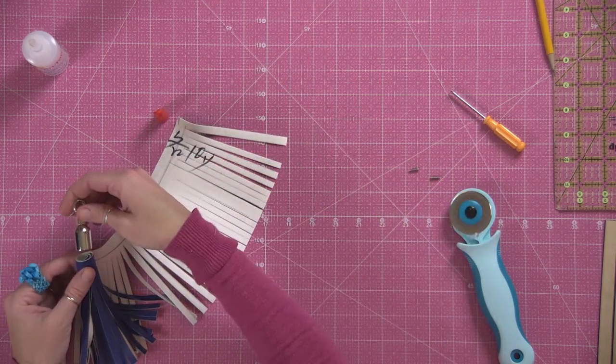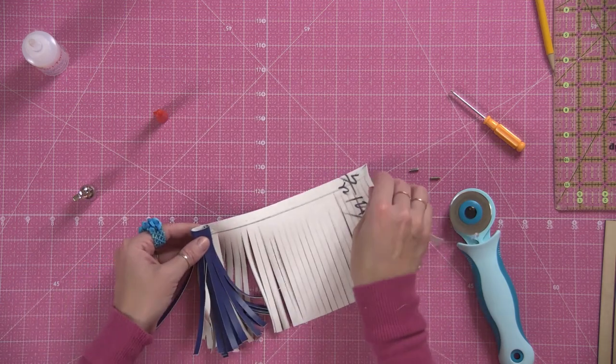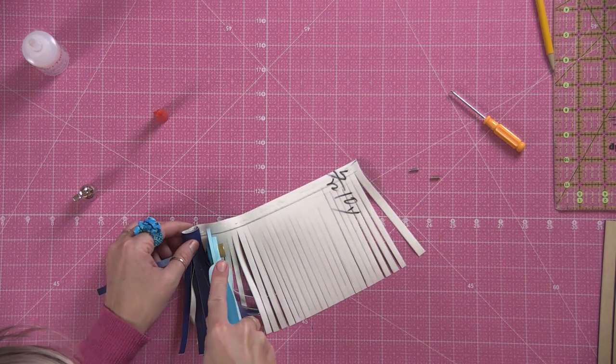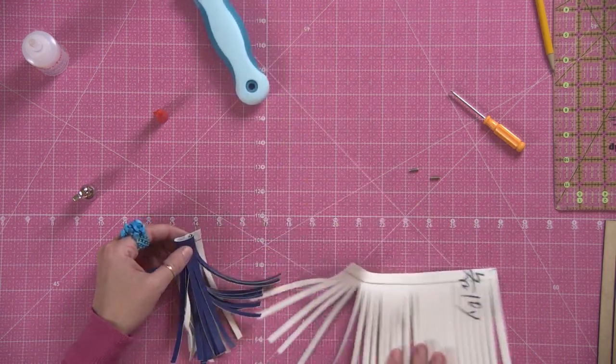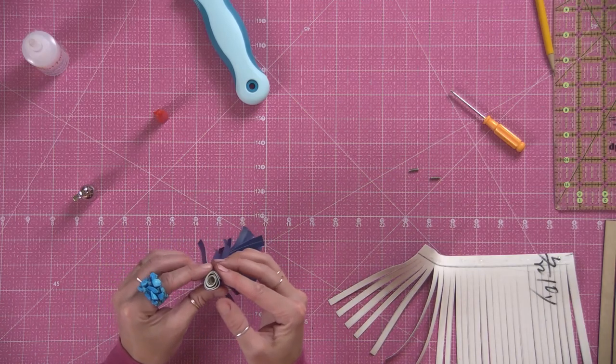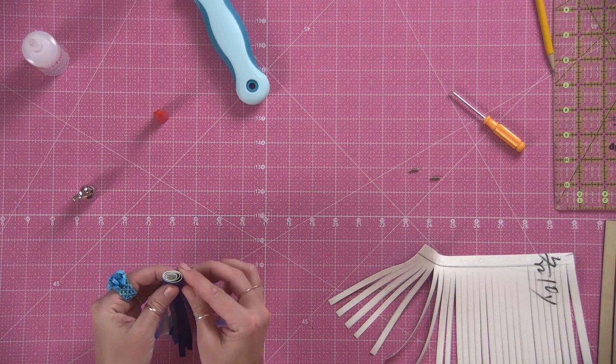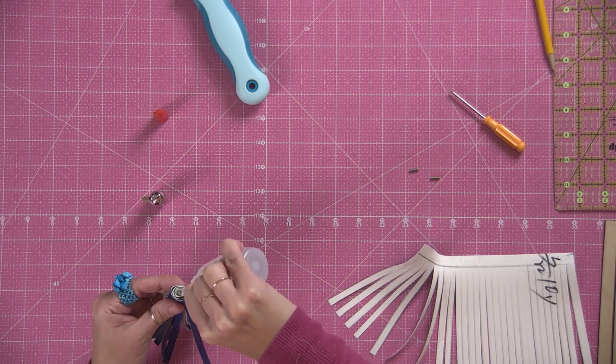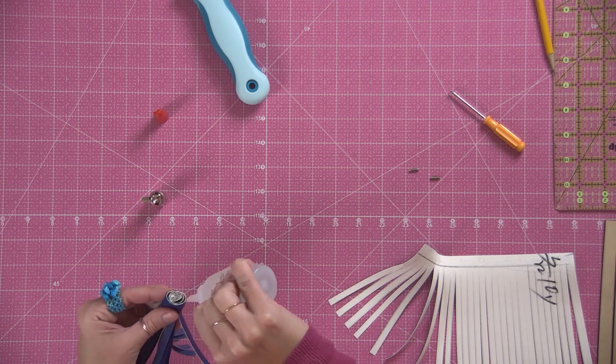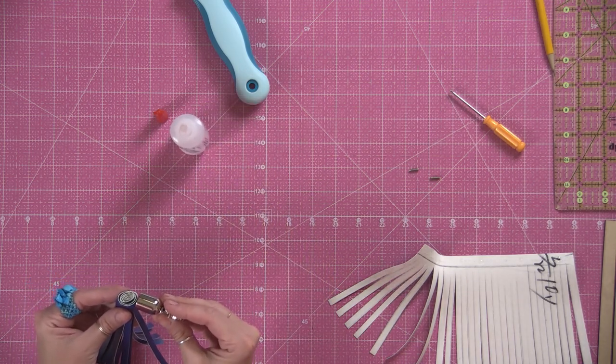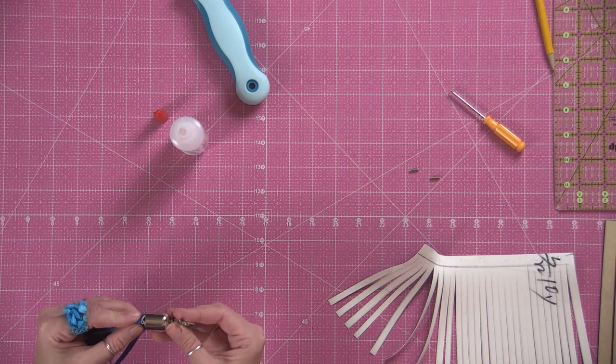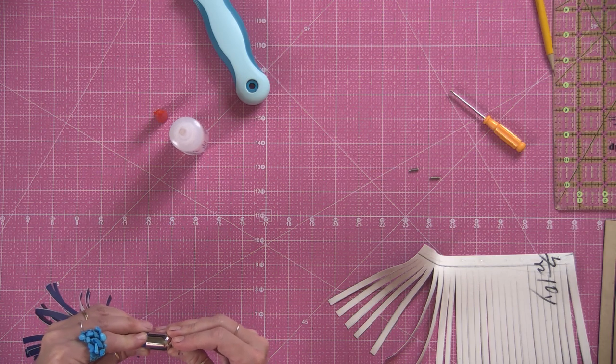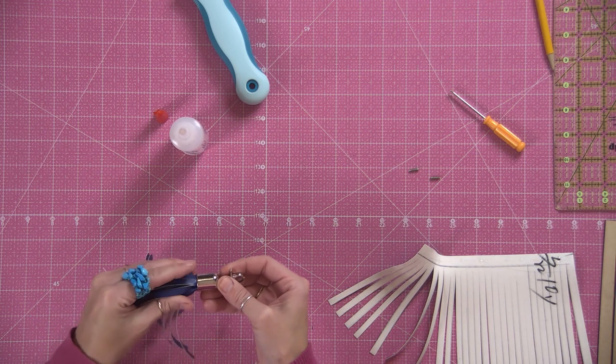Now I can see already I'm gonna get two tassels out of this, which is awesome. Put some glue around on the top and around, and then push it in.